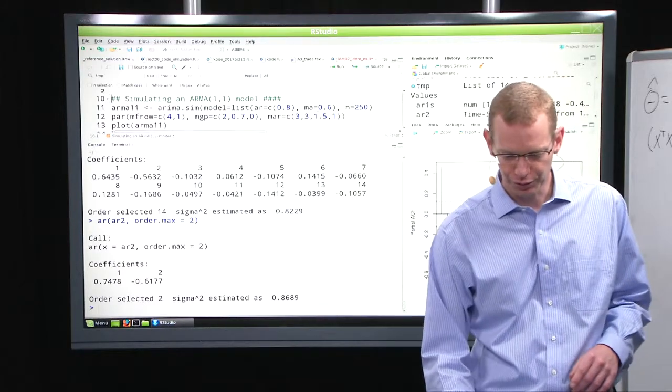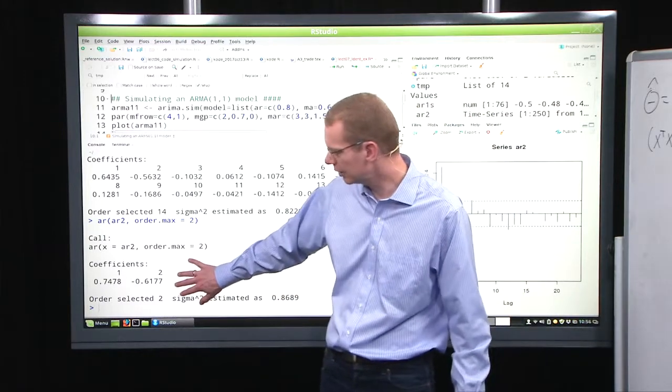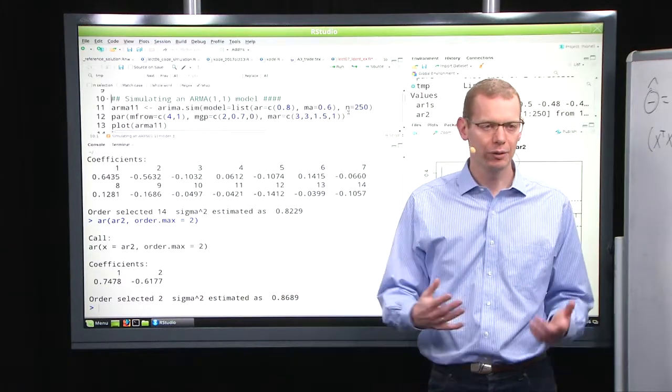And now I got coefficients 0.74 and minus 0.06, and the true values were 0.8 and 0.6. Now there is one big difference between this estimate and the one I got from the ARIMA function.